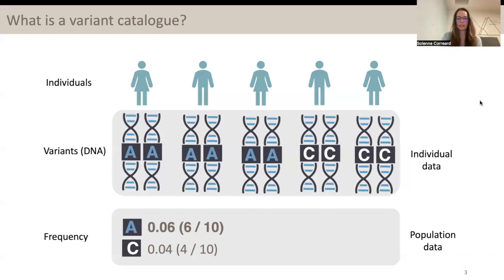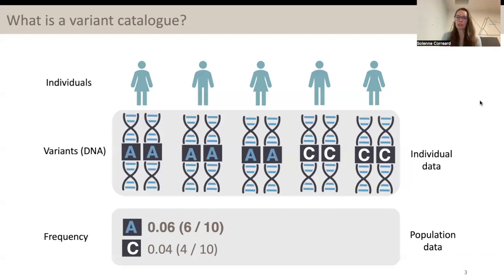In this example, the A allele has a frequency of 0.06, and the C allele has a frequency of 0.04. This is the main information within a variant catalogue pipeline: the frequency of the variants within the population.